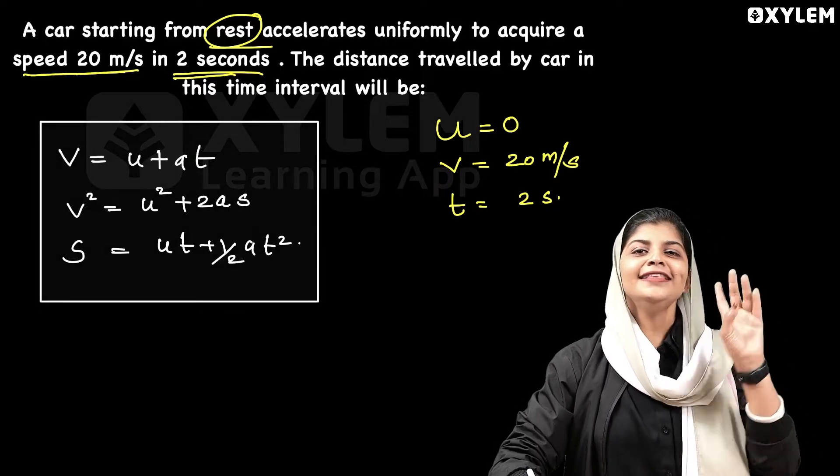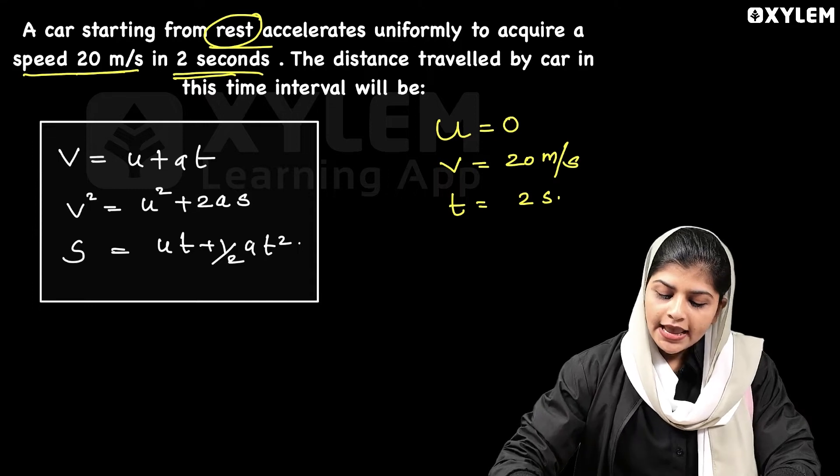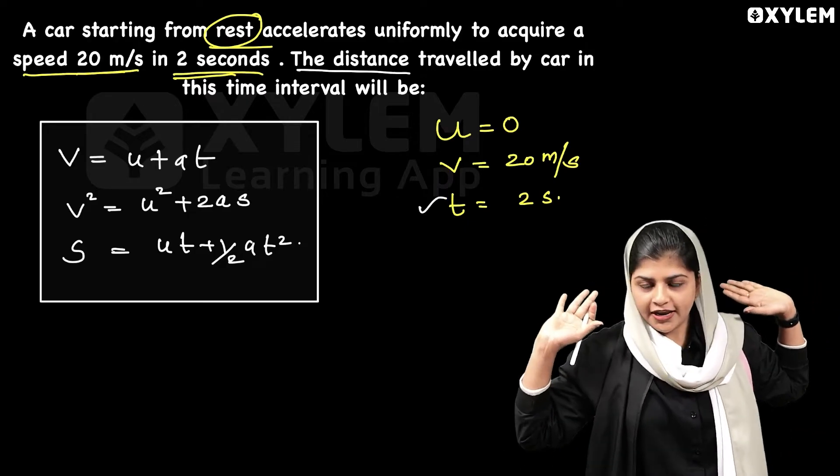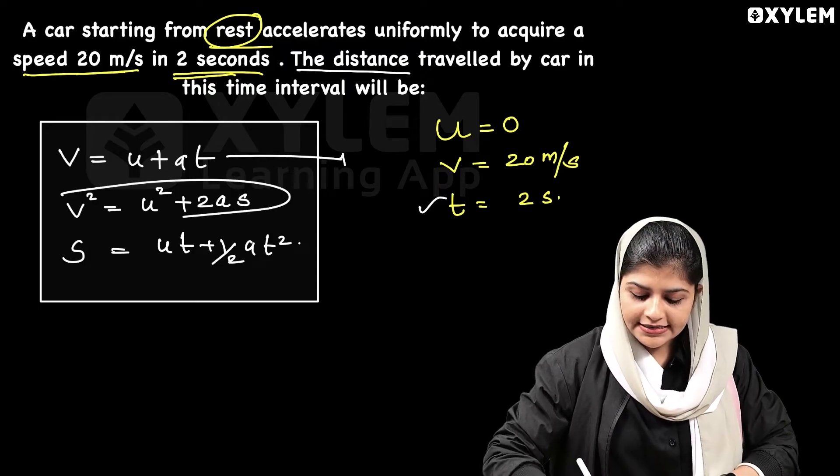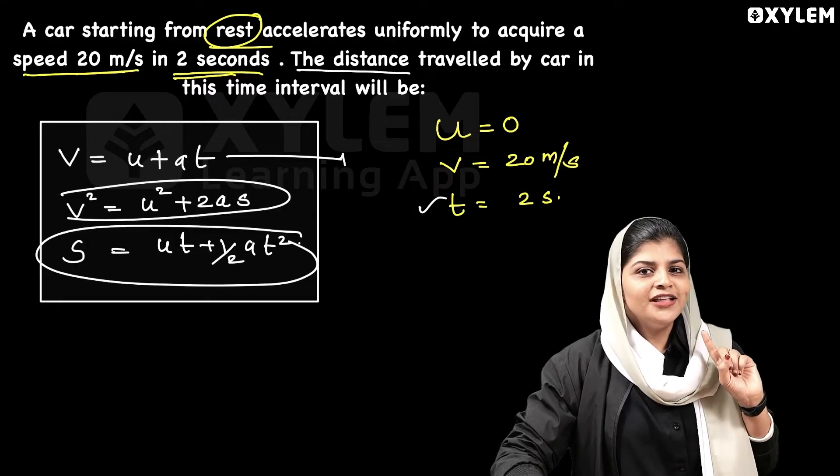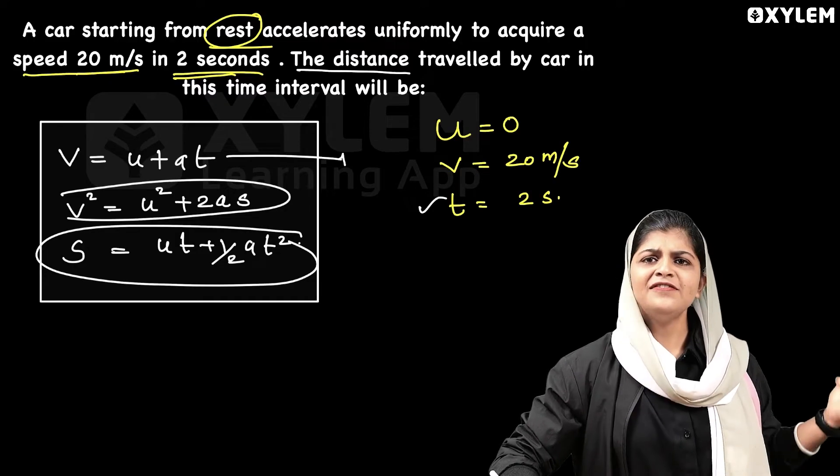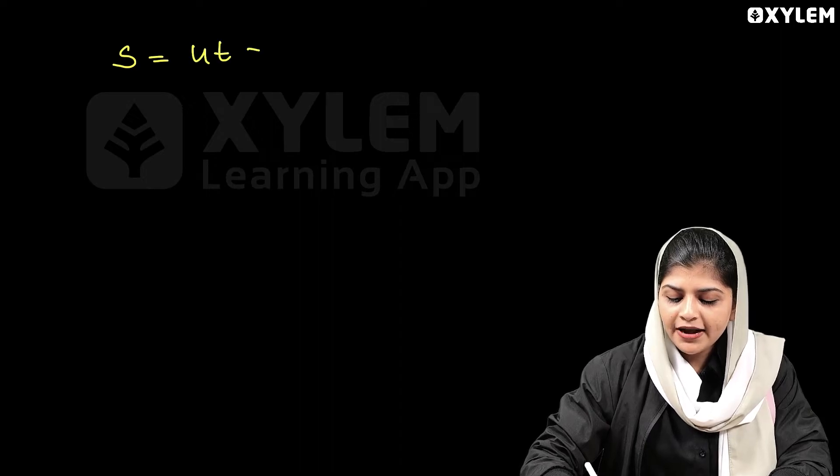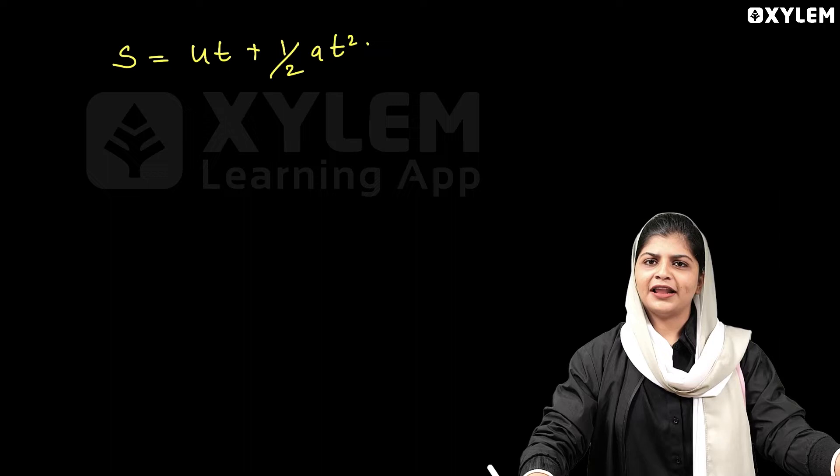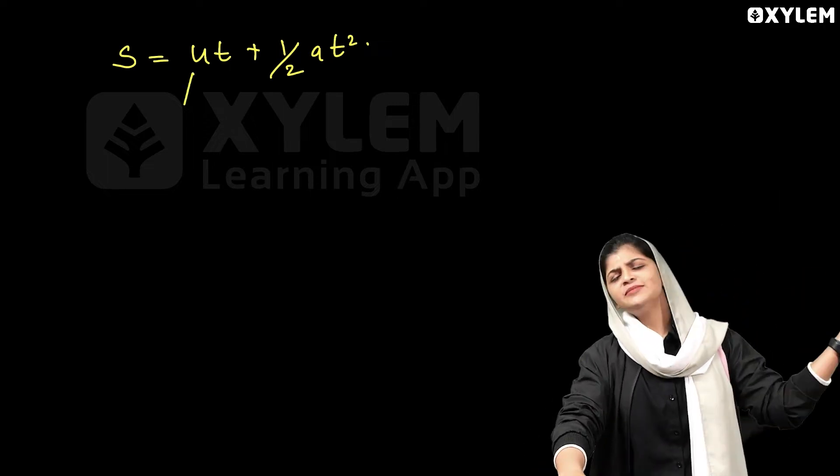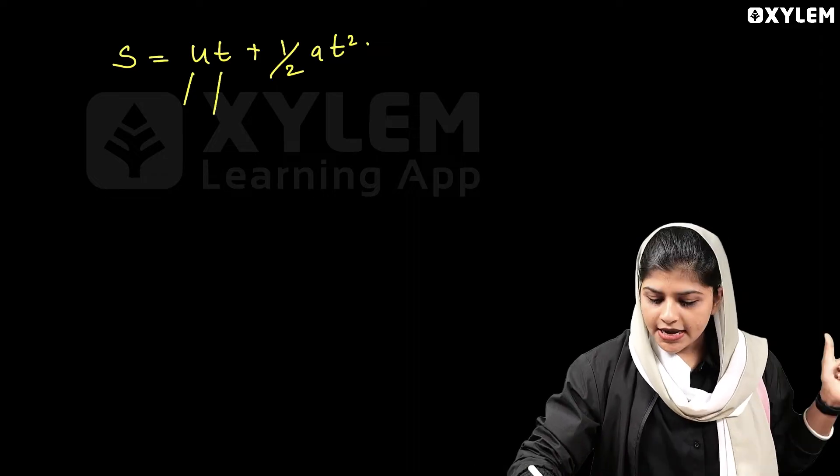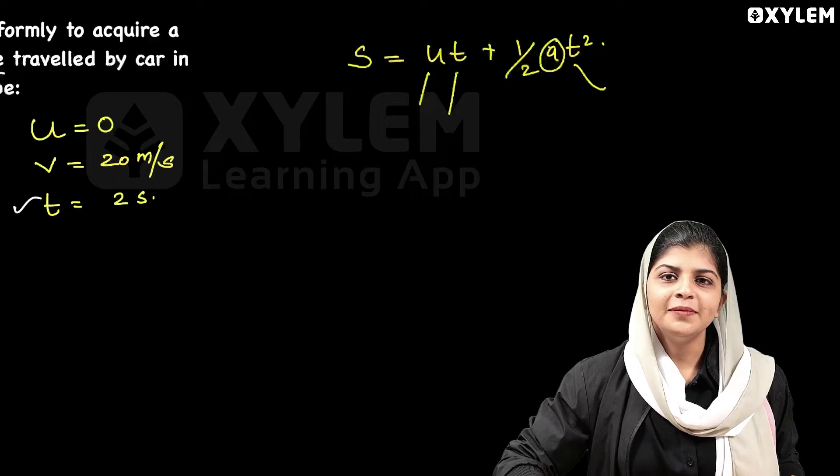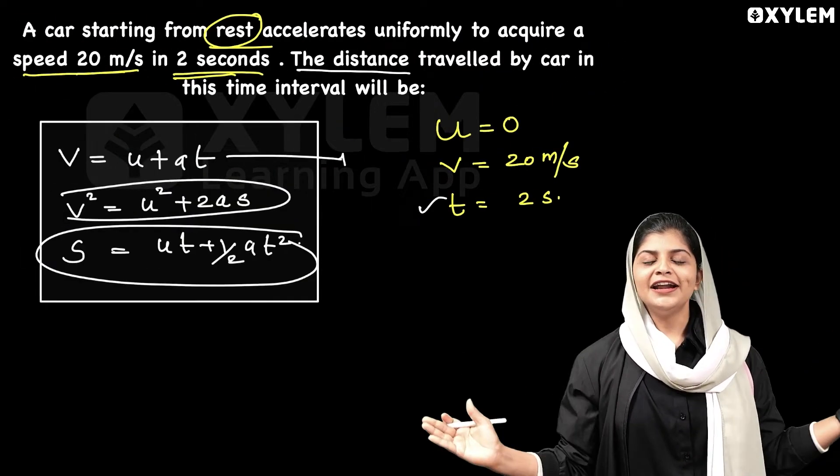We need to find the distance travelled. Distance is s. So we need to use the s equation. If we need to calculate s, we'll choose s equals ut plus half at square. This is the simple equation. S equals ut plus half at square. U is equal to 0, t is equal to 2 seconds. But we have confusion - what is a? We need to find a first. It is very simple.